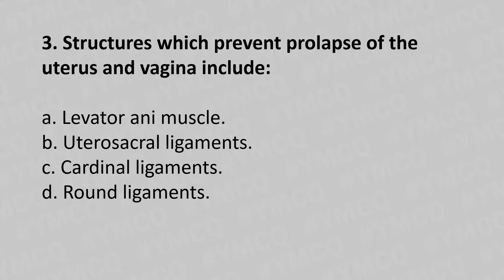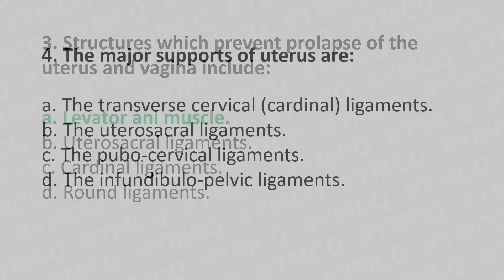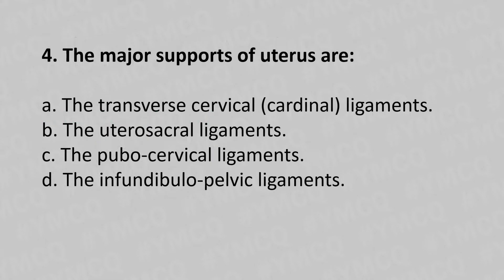Question 3: Structures which prevent the prolapse of the uterus and vagina include — option A: levator ani muscle, option B: uterosacral ligament, option C: cardinal ligaments, option D: round ligaments. The answer is option A: levator ani muscle.